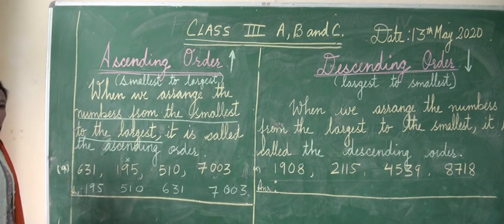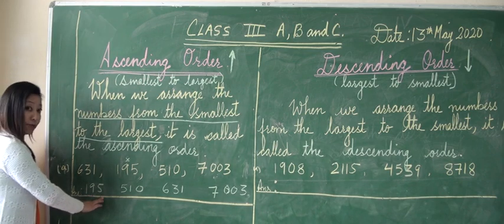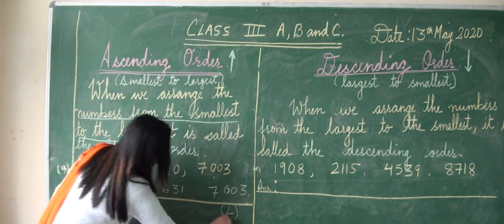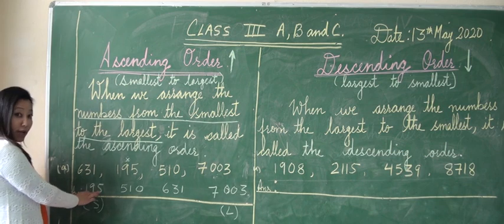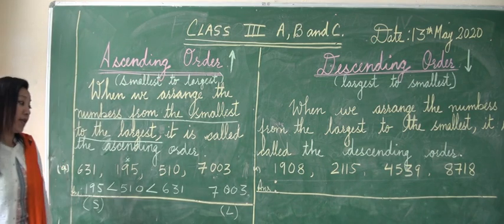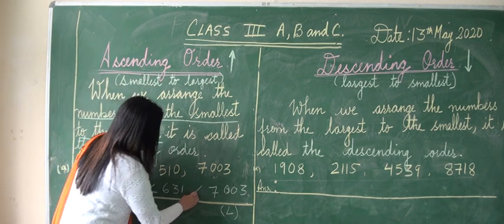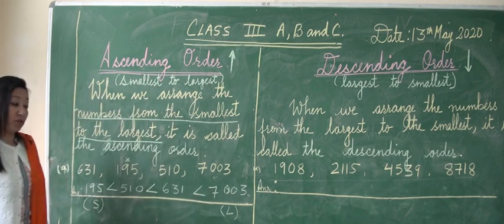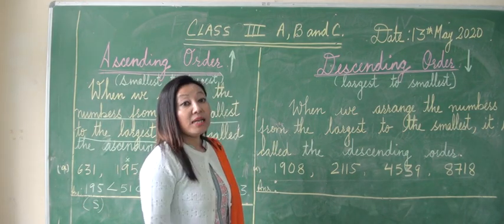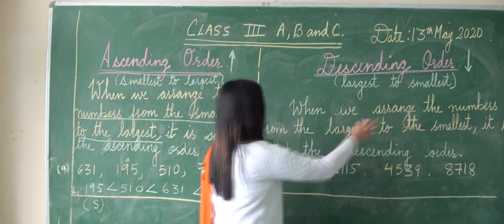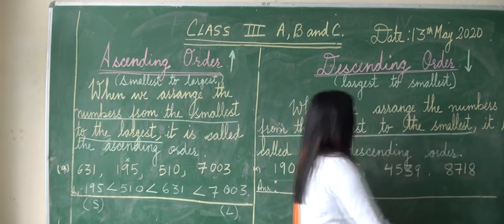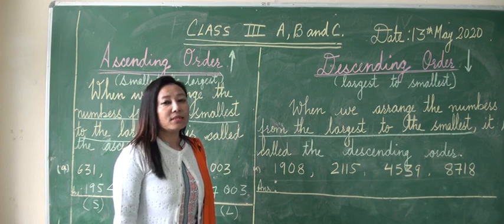So we can read: 195 is the smallest and 7003 is the largest number. 195 is smaller than 510, 510 is smaller than 631, and 631 is smaller than 7003. This is the ascending order. Now for descending order — when we arrange the numbers from the largest to the smallest, it is called the descending order.